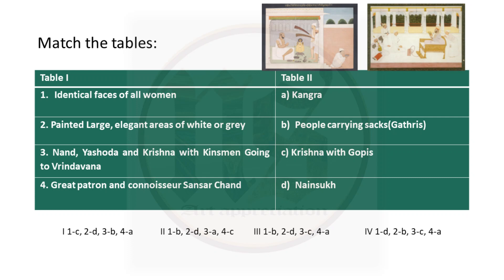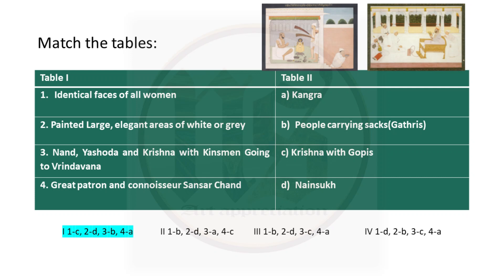Match the tables again. One: identical faces of all women — this we see in Krishna with Gopis from Basoli, where all Gopis look very similar in body type, facial features, and height. Two: painted large elegant areas of white or grey — this is seen in the paintings of Nain Sukh, who had the confidence and maturity to handle white or grey areas so elegantly. Three: Nandi Yashoda and Krishna with Kinsmen going to Vrindavan — in this painting people carry sacks going from Gokul to Vrindavan. Four: great patron and connoisseur Sansarchand — he is a ruler from Kangra. So the answers are: 1C, 2D, 3B, 4A.